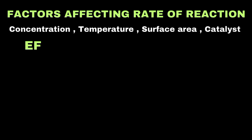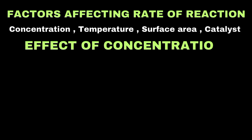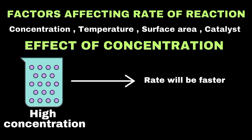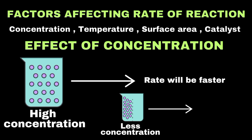A higher concentration means more molecules are available to collide, so the reaction will occur at a rapid speed. If reactants are present in lesser amounts, the speed of the reaction will be slower. So, concentration of reactants is directly proportional to the speed of the reaction. For example, when magnesium reacts with hydrochloric acid, increasing the acid concentration makes hydrogen gas form more quickly.